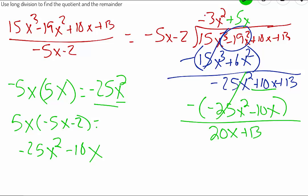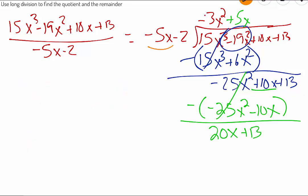For our final division here, we're dividing negative 5x into 20x. So negative 5x times what gives us 20x?